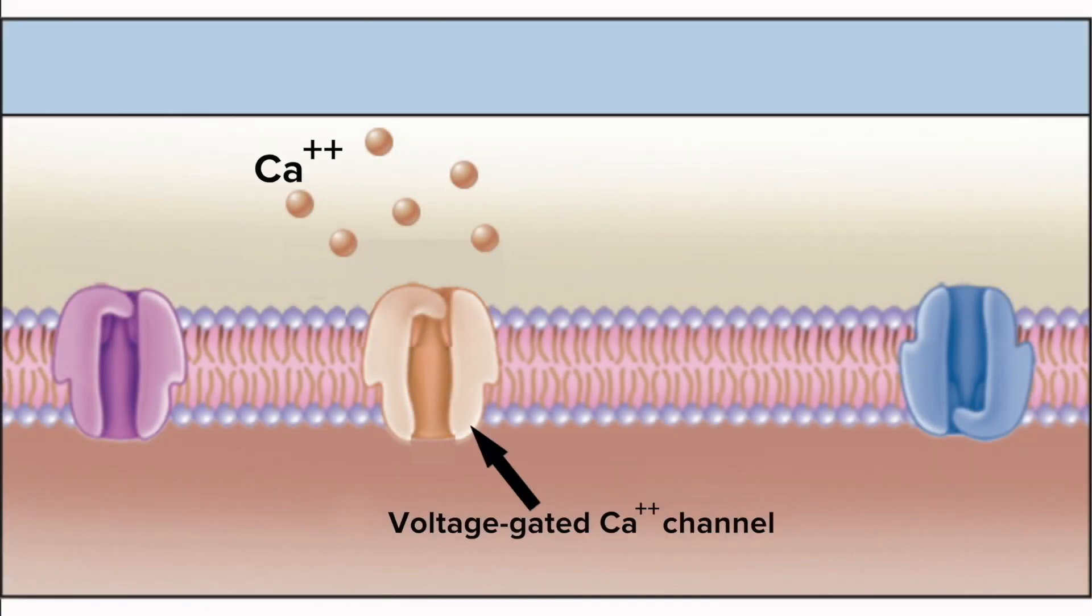Now this is a voltage-gated calcium ion channel. The voltage that stimulates the opening of its gates is minus 40 millivolts. We'll call that threshold.